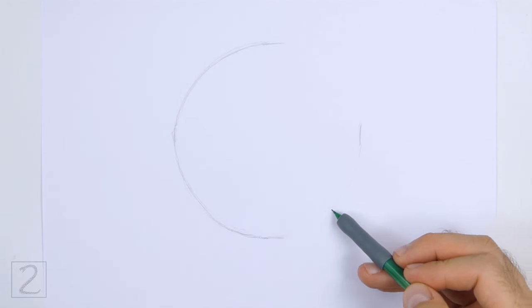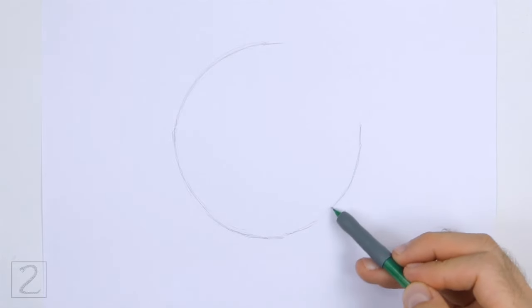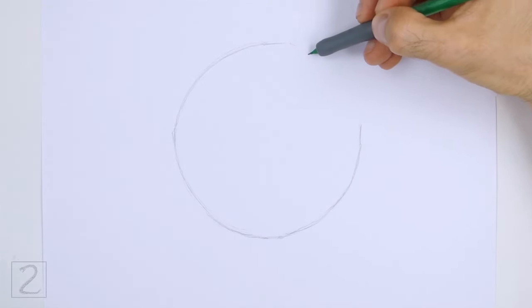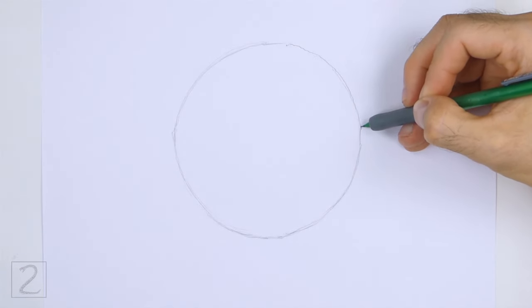The circle doesn't have to be perfect, but if you're having trouble drawing it, just trace the outer edge of a cup, a bowl, or anything else with a circular edge. The bigger you make this circle, the bigger the head will be.